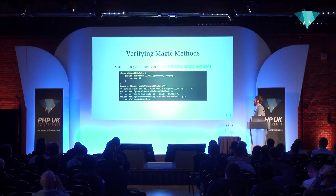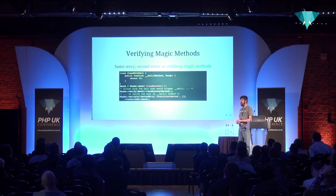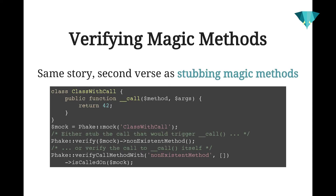Verifying magic methods works the same way as stubbing them. Instead of calling when, I'm calling verify and passing it the same name as the method I'd expect to be called. Because the double-underscore call magic method is used by Fake internally, you have to call a different method to check that it was invoked — verifyCallMethodWith — giving it the name of the method, the arguments expected to be passed, then calling isCalled on with the mock you expect it to be invoked on.